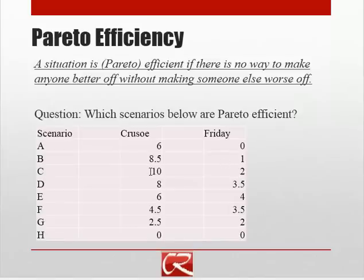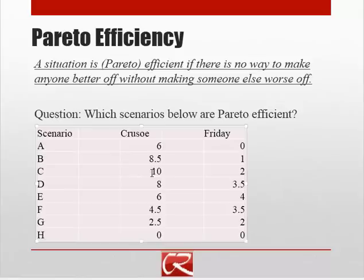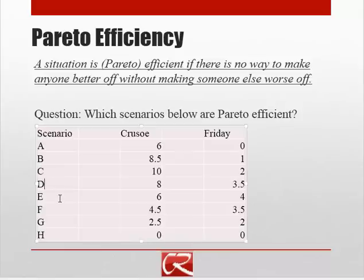What about C? C is efficient, and you want to make sure you realize why. The typical thing that students say is that C is efficient because it creates the biggest economic pie — the combined pie is 12, as opposed to lower numbers for everything else. That is part of the explanation, but a deeper explanation is that if we move from C down to D or from C back to A, we hurt one of the two in the process of possibly helping the other. So C is efficient. D is also efficient, because although moving up to C makes Crusoe better off, it makes Friday worse off.